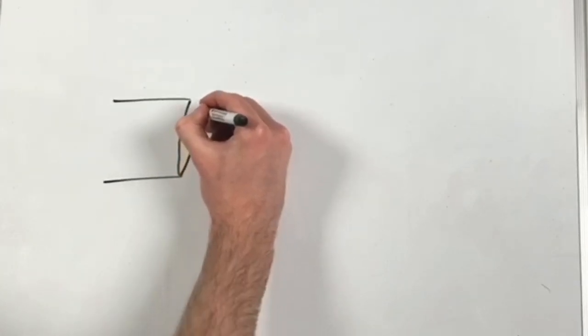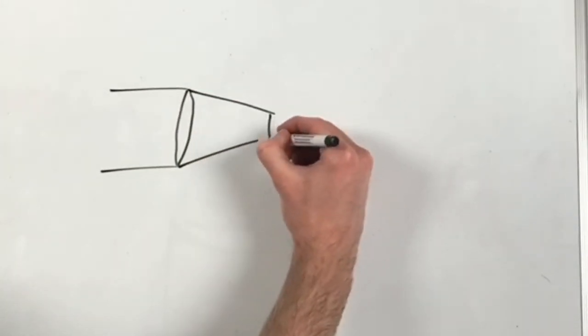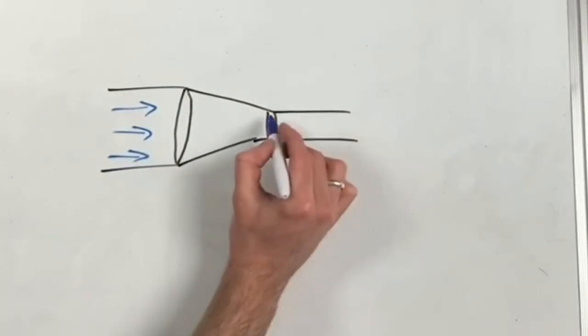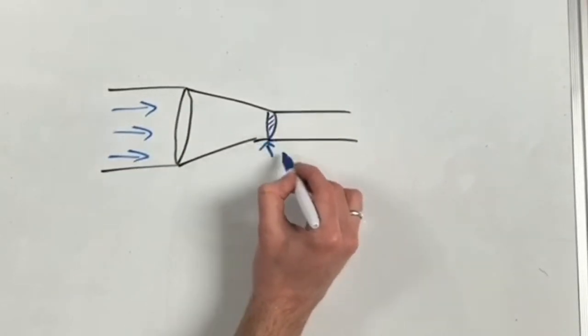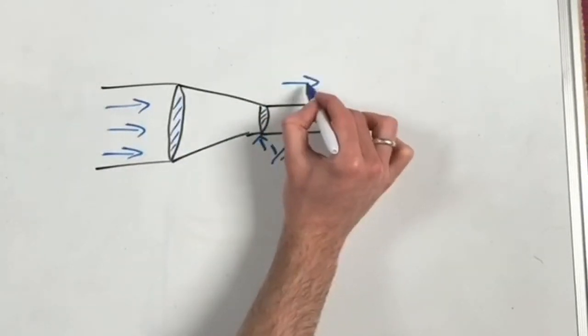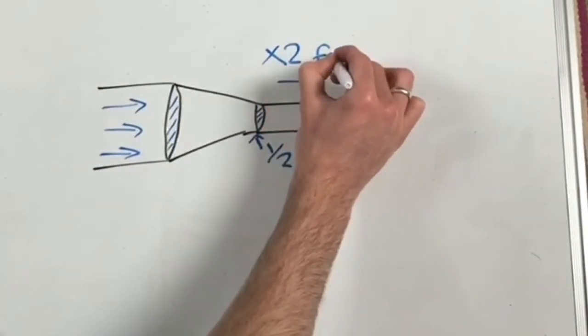So what we saw in the garden hose can be imitated with the simple diagram of a pipe constricting. If we imagine that the flow is constant and the constricted area is half that of the initial area, then the water flowing through this constricted area will have to travel at twice the velocity.